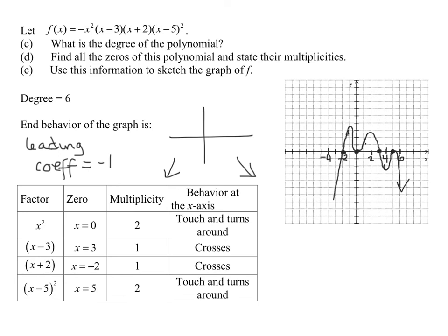And one thing to notice, my graph ends up pointing down in this direction. Is that what the end behavior said? Yes. So that's a nice confirmation that my graph looks correct. Now remember, your graph could go up a lot higher or it could go up lower. It doesn't matter as long as it has this basic shape. That is all we're looking for.